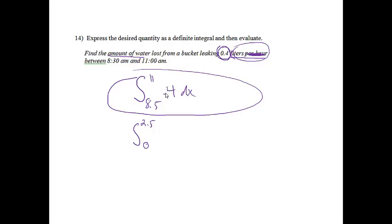From here, we're going to go ahead and evaluate it. The integral of 0.4 is 0.4x. And now I can go ahead and evaluate it at 11 and 8.5. When I do that, I'm going to get 4.4 minus 3.4. And when I subtract those, I will get 1. And my units will be, if I was at liters per hour and I got rid of my per hour, it is 1 liter. And that was the amount of water that I lost from the bucket between 8:30 and 11. And if you worked it from 0 to 2.5, you should still get 1 as an answer.